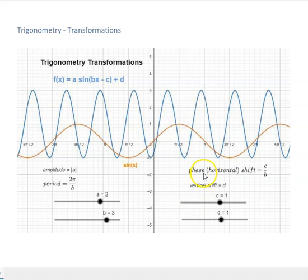The phase shift, which is the horizontal shift, how it moves horizontally in relation to its simple starting sine function, is given by the formula c over b. In this case, it will be 1 over 3, 1/3. So it shifts 1/3 to the right.